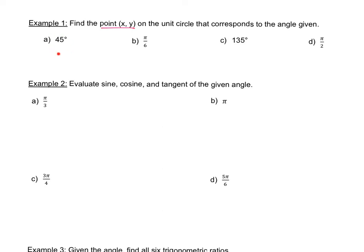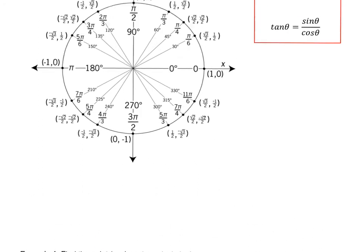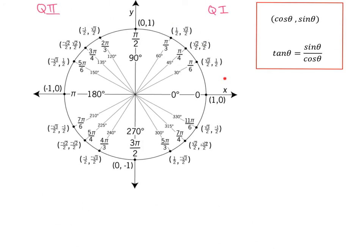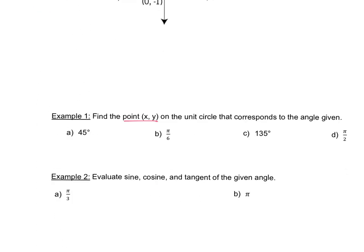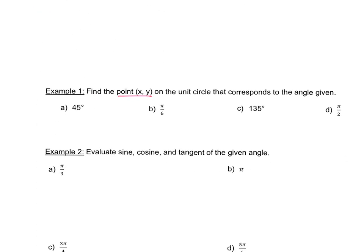The first one is asking for the 45 degree angle. If you scroll up to 45 degrees, it's in the first quadrant at pi over 4. The coordinate there is square root of 2 over 2 for both x and y — so square root of 2 over 2 for both.